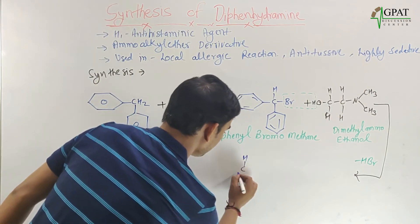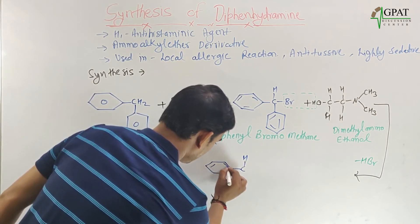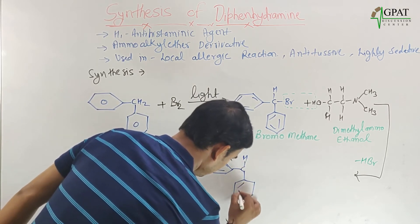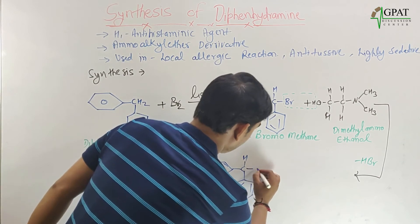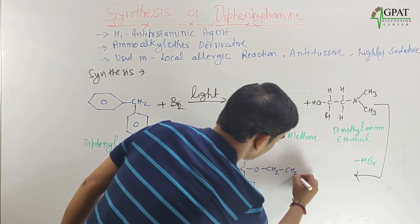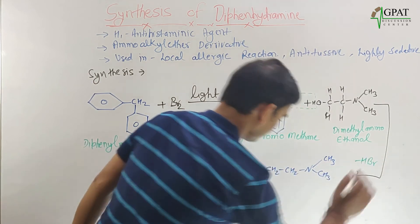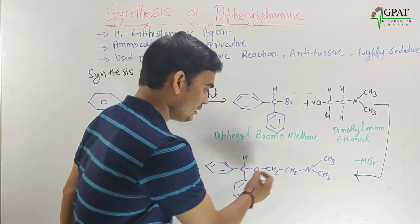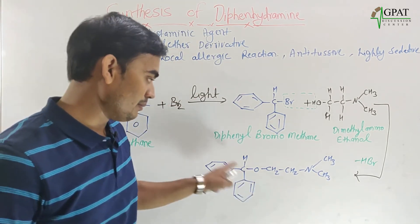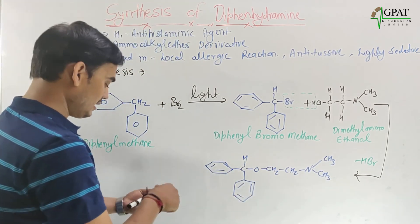In the final product, we have one phenyl group and a second phenyl group attached to a central carbon, followed by an O, CH2, CH2, and N(CH3)2 chain. Since there is an ether bond present, this is known as an aminoalkyl ether derivative. This is our final product — diphenhydramine.